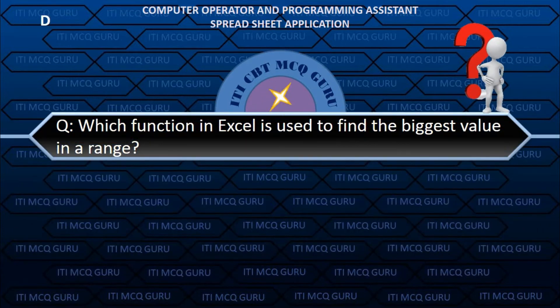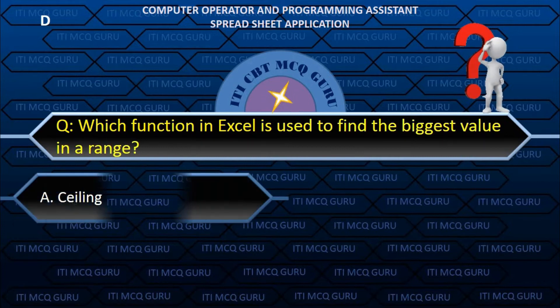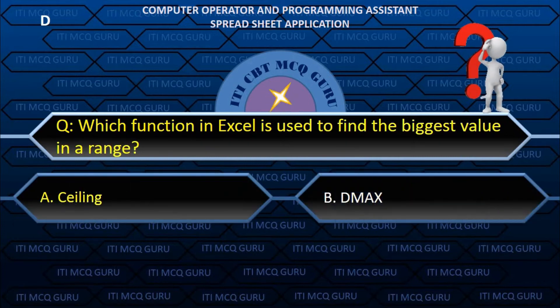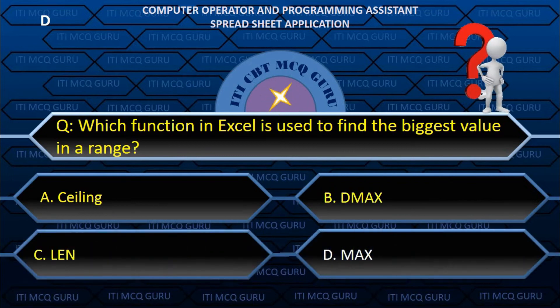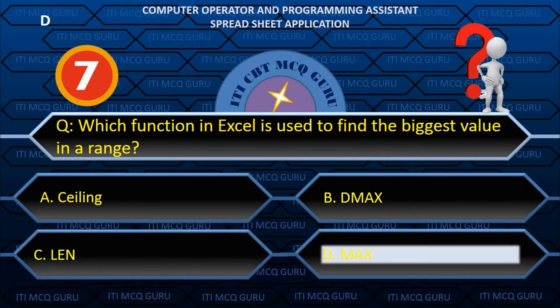Which function in Excel is used to find the biggest value in a range? B. MAX().